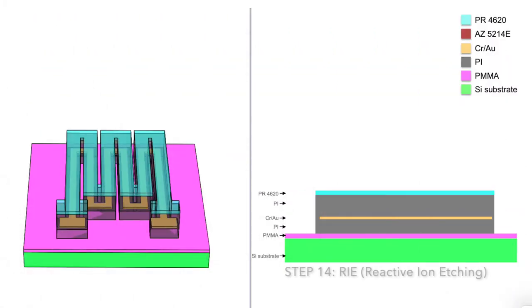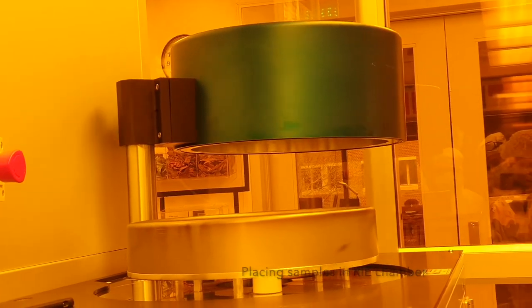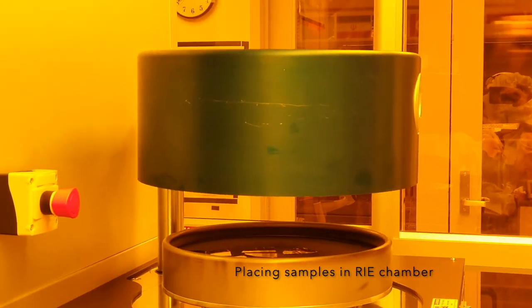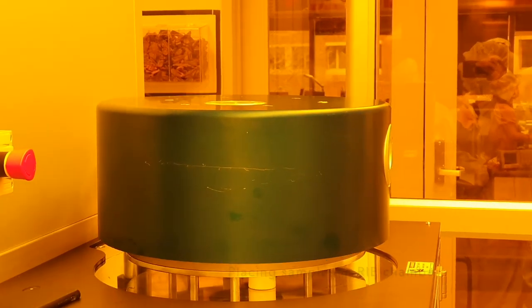To etch the polyimide encapsulation layers, we use a process called reactive ion etching. In the RIE chamber, we introduce a reactive plasma to remove the polyimide regions outside of the secondary photoresist pattern.